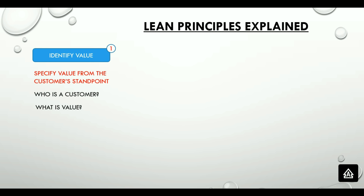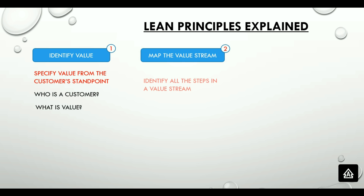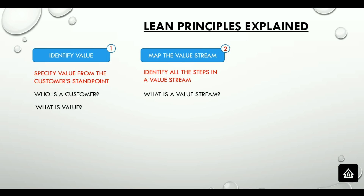The next step is mapping the value stream. All steps in the process should be mapped, including both value-adding and non-value-adding activities. In a contact center, a value stream could be the complete end-to-end sequence of activities to process and satisfy a customer contact event, which could be a call, a chat, or an email.